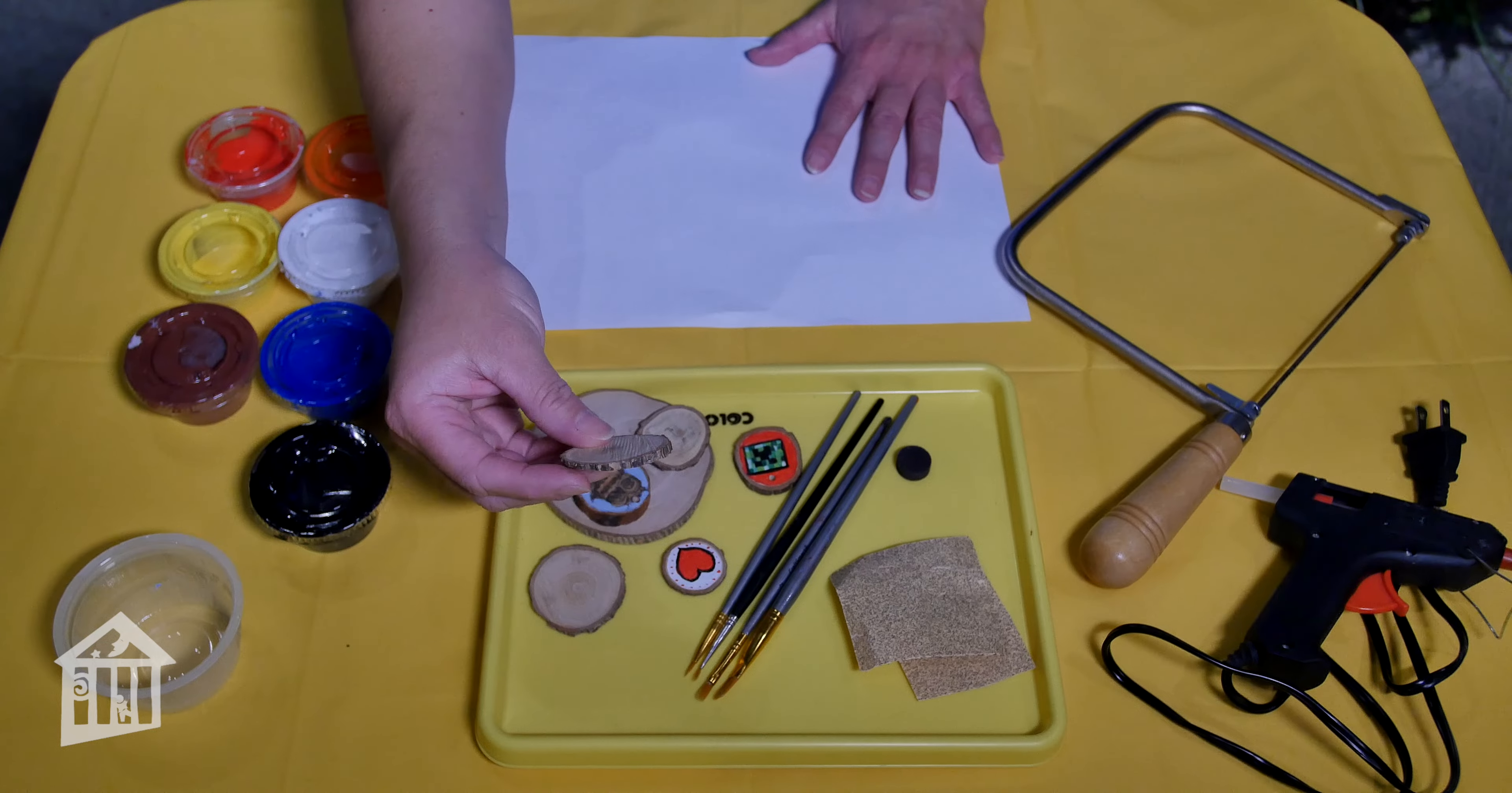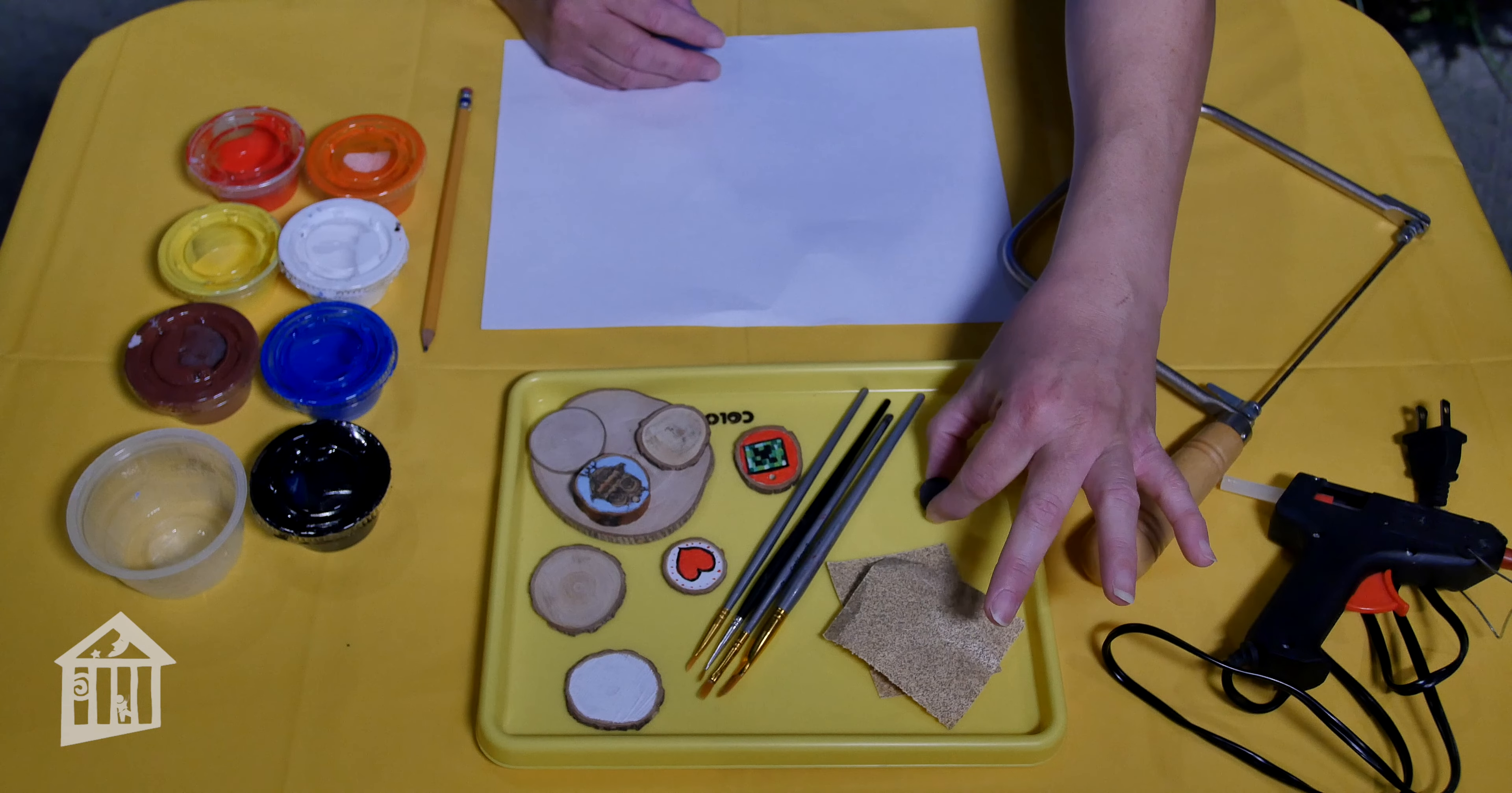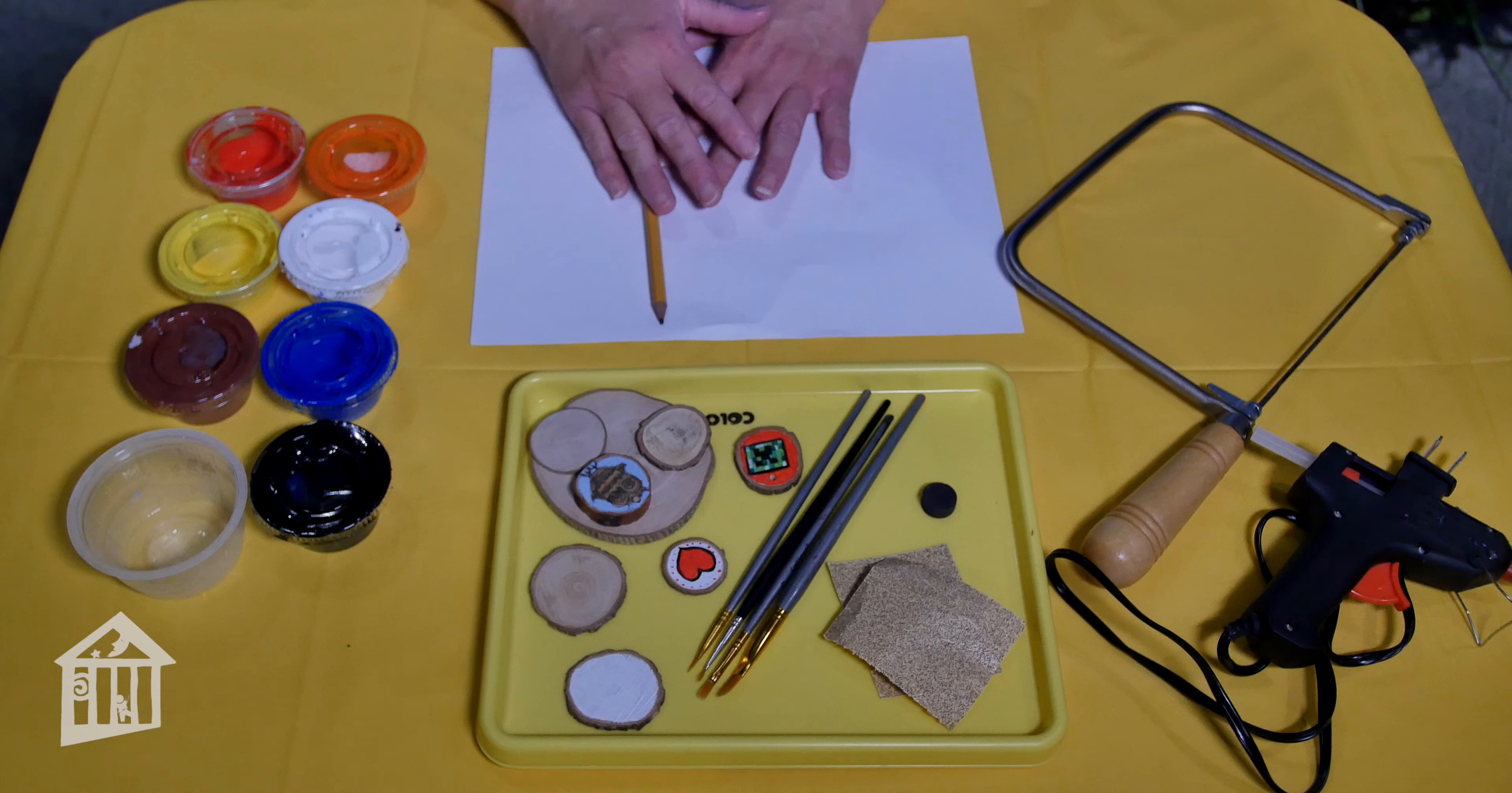So once you have your slices done, you're going to notice that they have kind of a ridge on them. So you'll also need sandpaper. Sandpaper will make it smooth. You'll need some brushes, some paint, a little container for your water, and then your magnet and hot glue gun to put your magnet on. And I'm going to show you how to transfer a drawing to a wood slice just using pencil and paper. So you'll need a pencil and paper if you want to do that. And that's pretty much it.